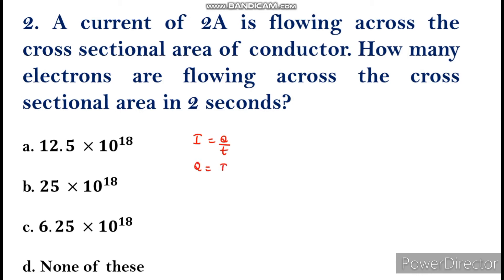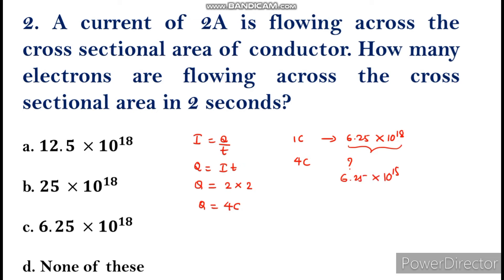Charge Q equals I into T, which is 2 ampere into 2 seconds, giving 4 coulombs. Now, 1 coulomb of charge contains 6.25 × 10¹⁸ electrons. For 4 coulombs, multiply by 4: 6.25 × 4 = 25, so 25 × 10¹⁸ electrons are flowing. The answer is option B, 25 × 10¹⁸.